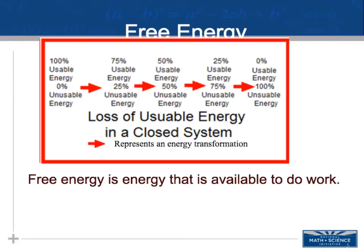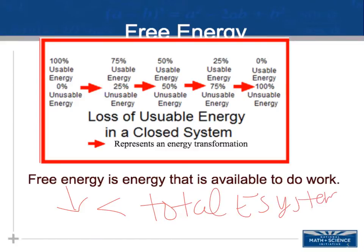Free energy is the energy available to do work, and free energy is always going to be less than the total energy of the system. You cannot have more energy available to do work than what is in the system. Our free energy is going to be the energy available to do work, and it will always be less than the total energy available.